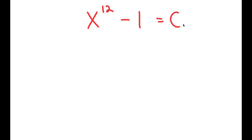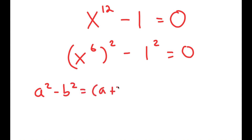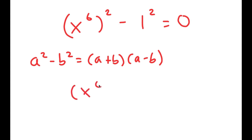In this video, I'm going to solve the equation x to the power of 12 minus 1 is equal to 0. To solve this, I'm going to first rewrite this as x to the power of 6, squared, minus 1 squared is equal to 0. I can use the property a squared minus b squared equals a plus b times a minus b. So this turns into x to the power of 6 plus 1 times x to the power of 6 minus 1 is equal to 0.